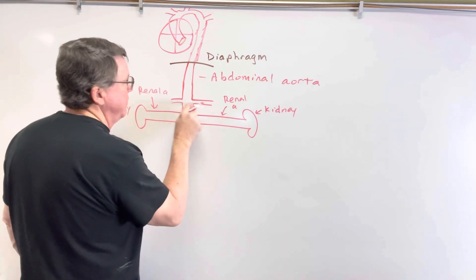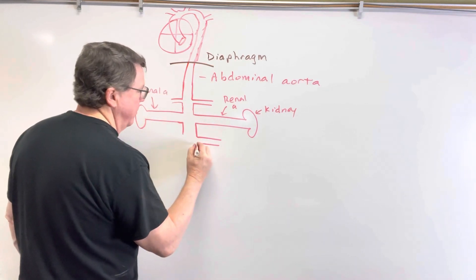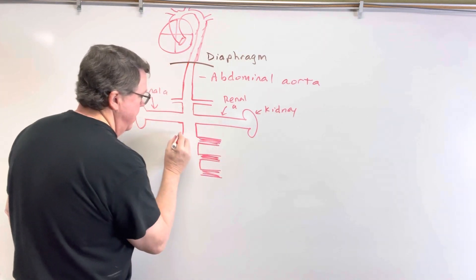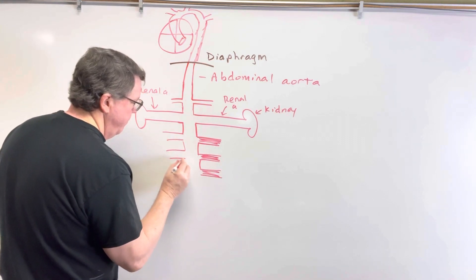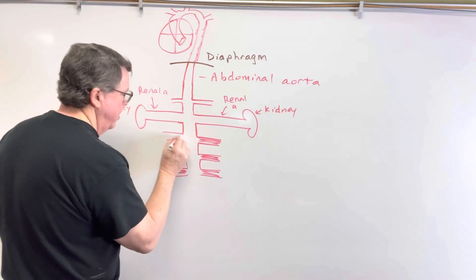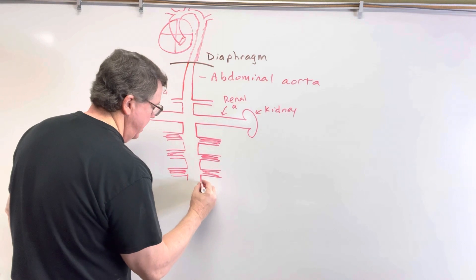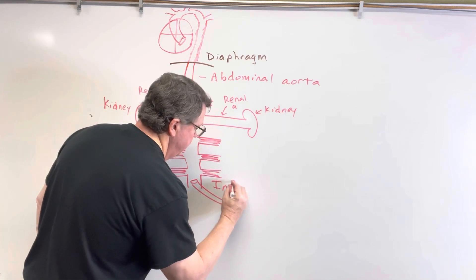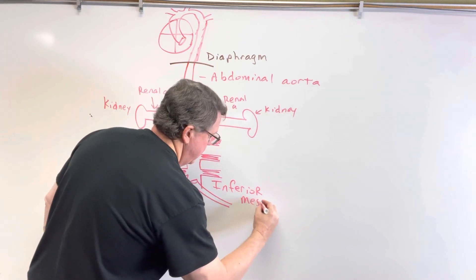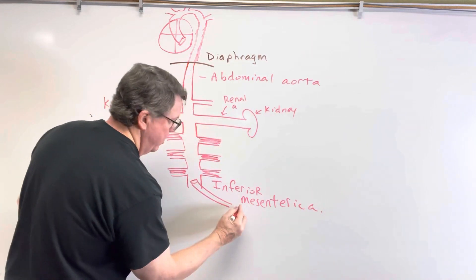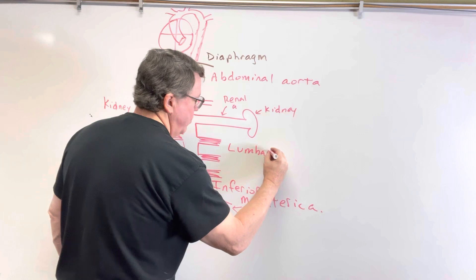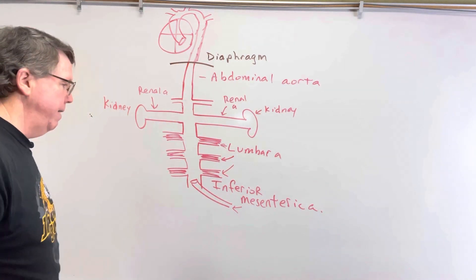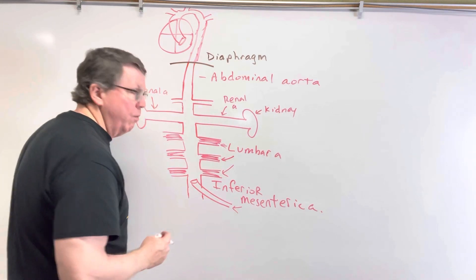Below the kidneys, we're going to have the rest of the lumbar arteries. You have four pairs of lumbar arteries — one pair, two pair, three pair — and they come off both sides. Then as we continue down, you have another artery that comes off the front, and this is going to be called the inferior mesenteric artery. These lumbar arteries are going to play a role when we get to endoleaks.